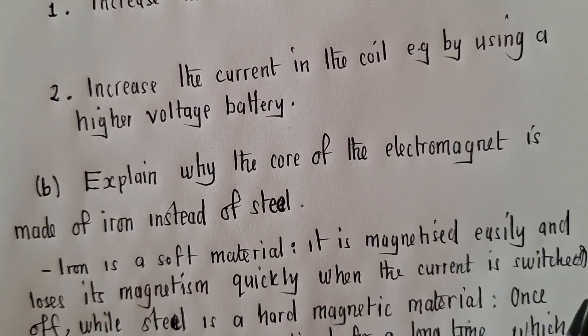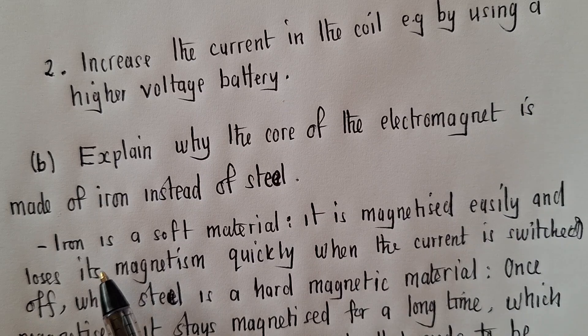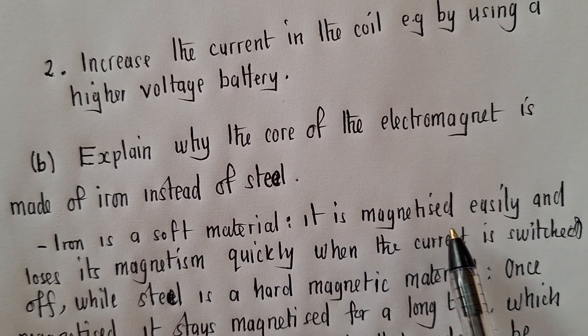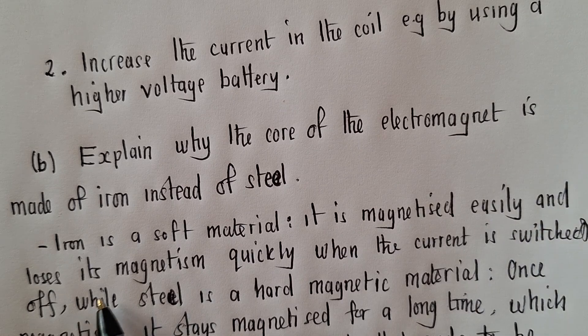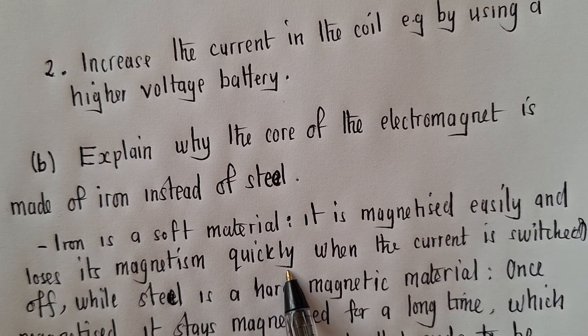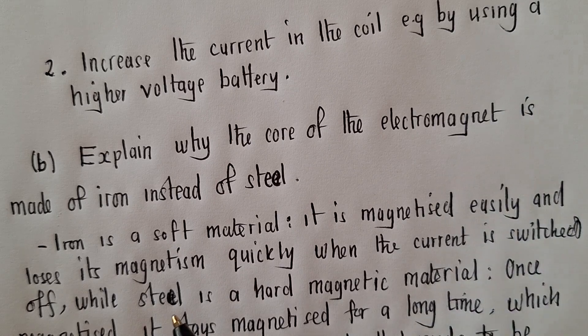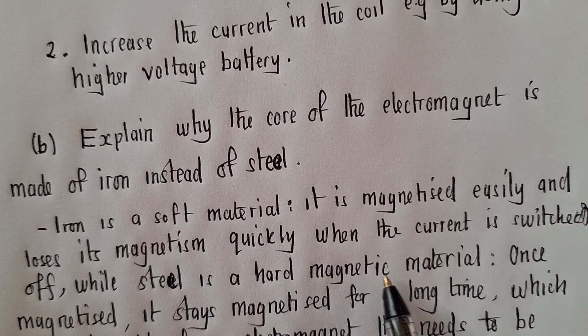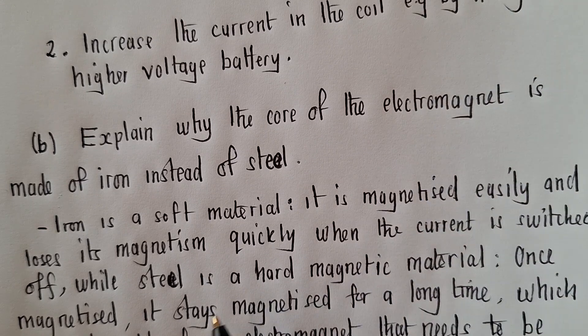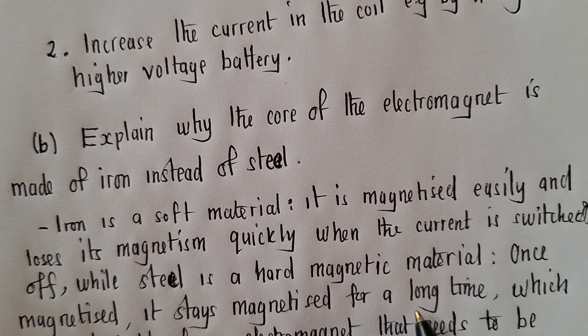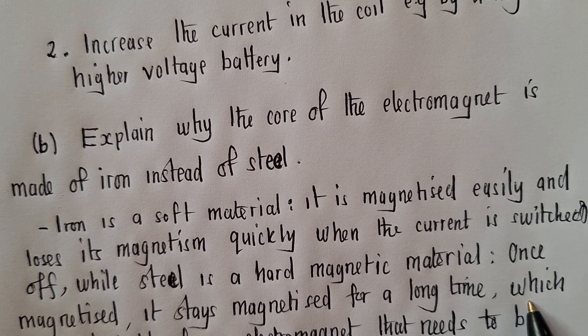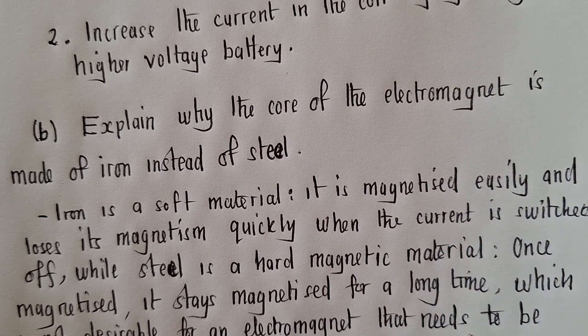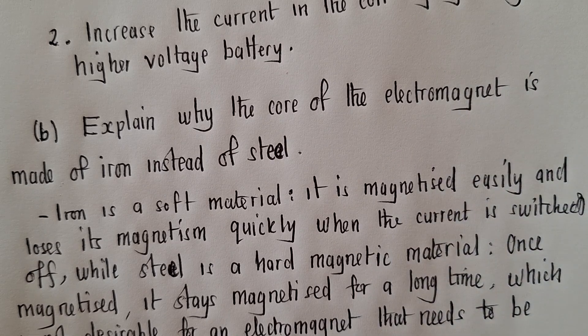So let's see how we're supposed to write the answers. So here, iron is a soft material. It is magnetized easily and loses its magnetism quickly when the current is switched off. So it loses and it also gains. While steel is a hard magnetic material, once magnetized it stays magnetized for a long time, which is not desirable for an electromagnet.